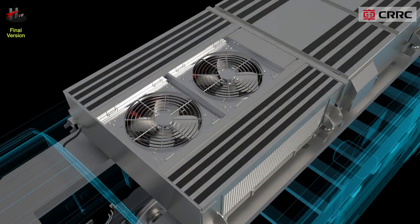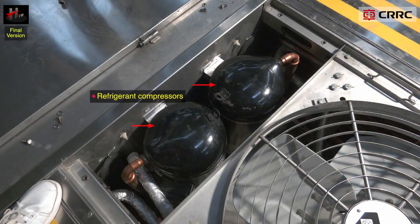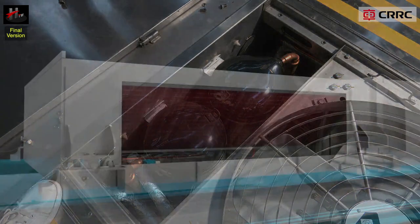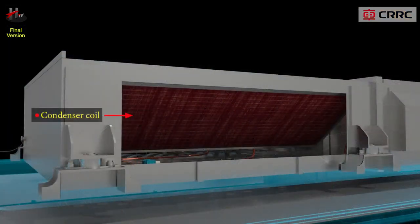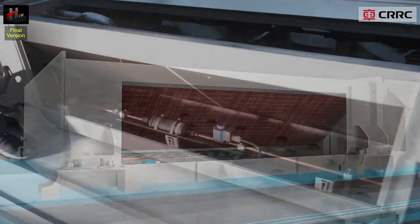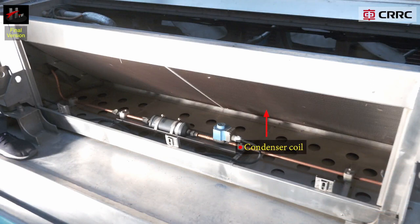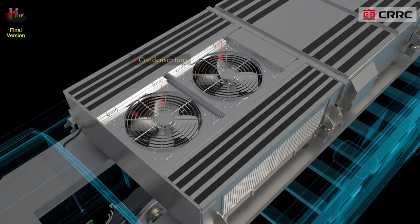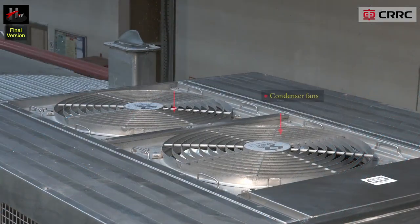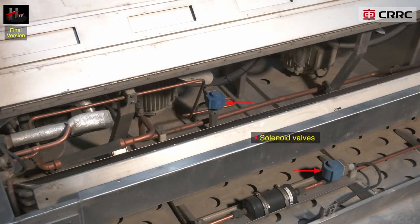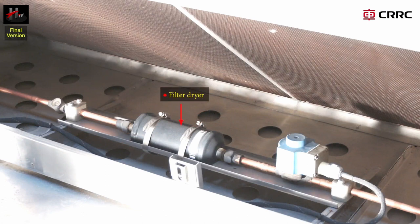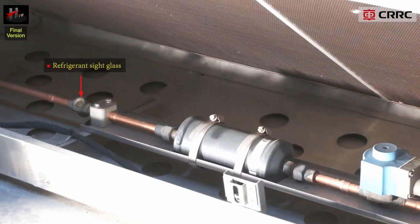The condenser compartment accommodates the refrigerant compressors, condenser coils, condenser fans, solenoid valves, filter dryer, and the refrigerant sight glass.